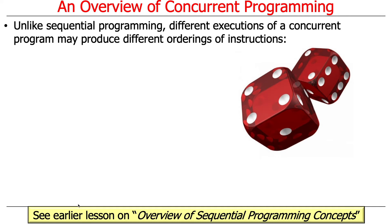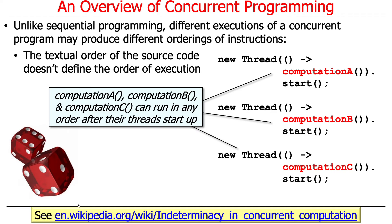Unlike sequential programs, which are very deterministic, different executions of a concurrent program may produce different orderings of instructions — and on a multi-core processor, they're very likely to have different orderings. As a consequence, unlike sequential code where textual order defines execution order, in concurrent programs the textual order of source code does not define the order of execution.